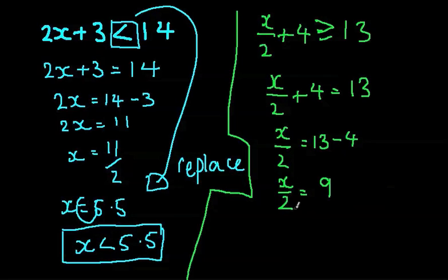And then what we need to do is bring this 2 over onto this side to get x on its own. So when we move this 2 from this divided area and we move it up, it becomes times. So x equals 9 times by 2 and x equals 18.